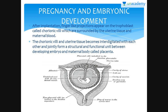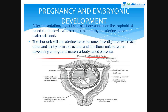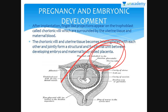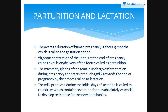After implantation, finger-like projections appear on the trophoblast as chorionic villi, which are surrounded by uterine tissue and maternal blood. The chorionic villi and uterine tissues become interdigitated with each other and jointly form a structural and functional unit between the developing embryo and the maternal body, called placenta.